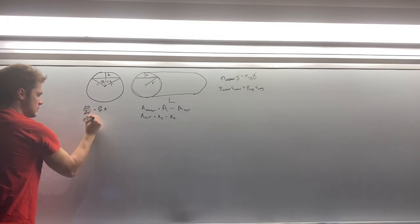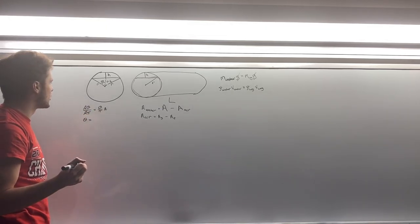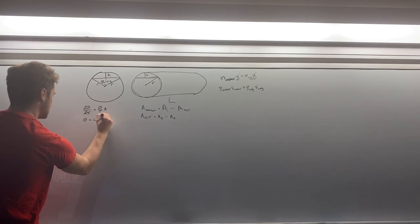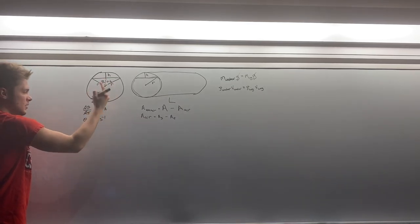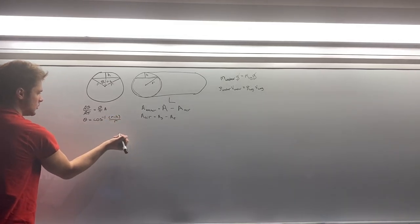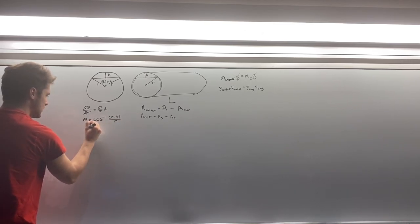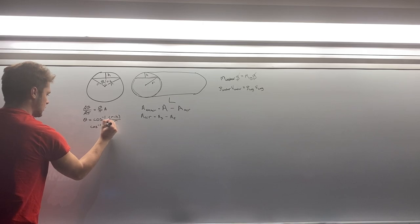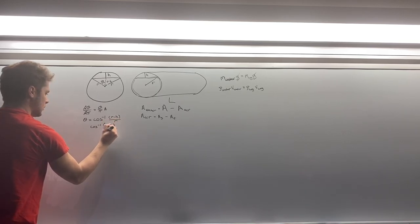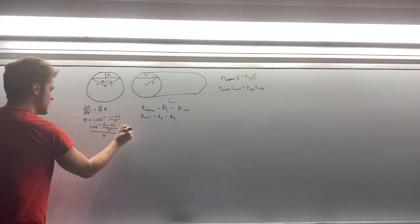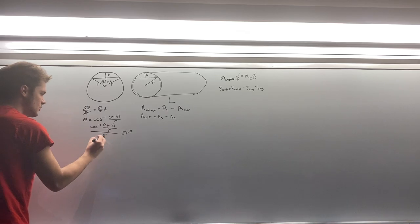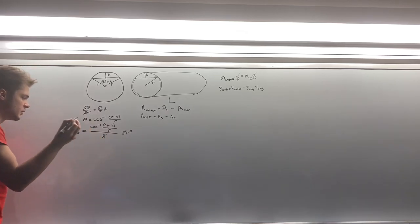Using a little trigonometry, θ equals the inverse cosine of the adjacent side over the hypotenuse, which is (r − h) over r. Putting that under π and multiplying by πR², the π's cancel, and this gives us the total area of our circular sector.